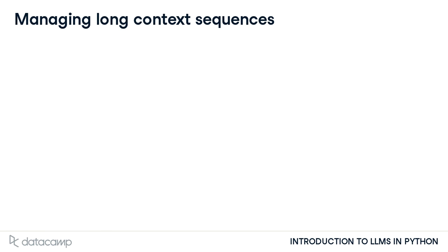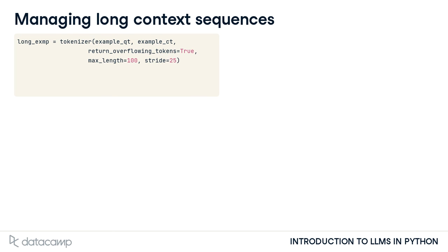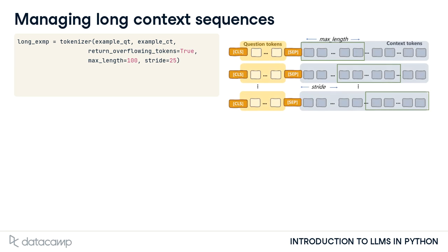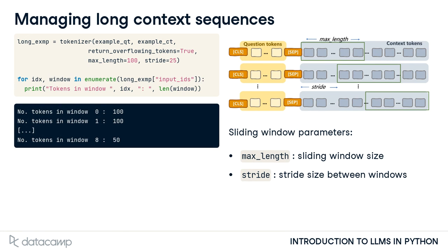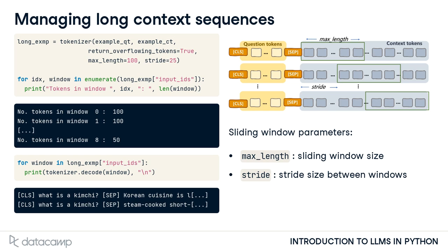To accommodate context longer than the LLM's maximum sequence length, we can set the return_overflowing_tokens argument in the tokenizer to true, to activate a sliding window that splits the context into multiple overlapping windows. The max_length and stride arguments help set up a window size — for instance 100 tokens — and the distance between consecutive windows — for instance 25 tokens. Here's the size of each resulting window. The last one is typically shorter, unless the original sequence length is a multiple of the window size. After decoding, we observe that the original input sequence is split into several windows with sliding context passages.